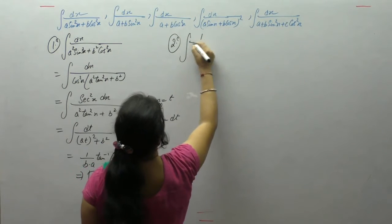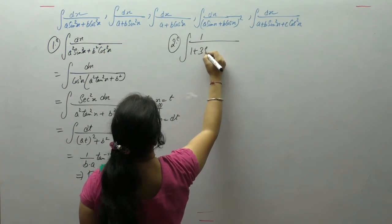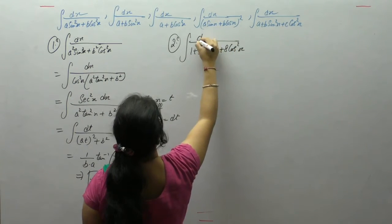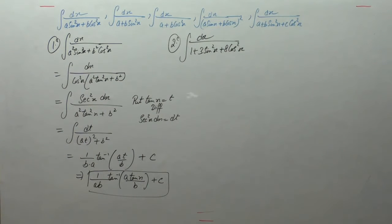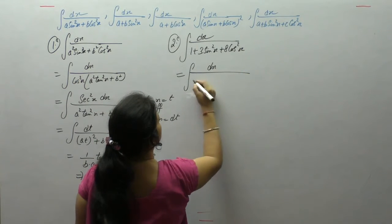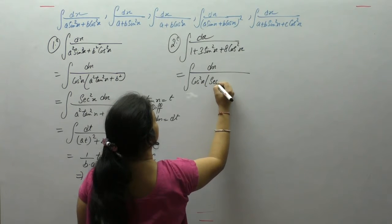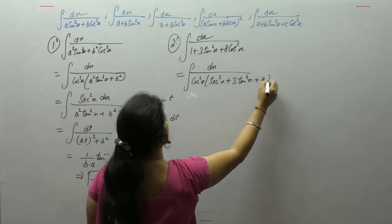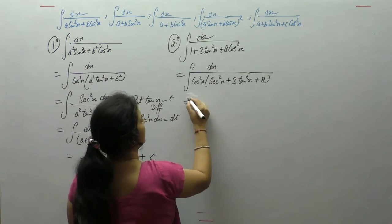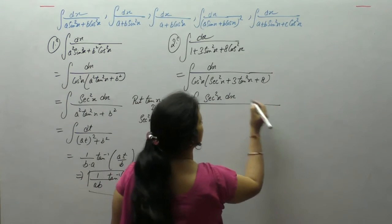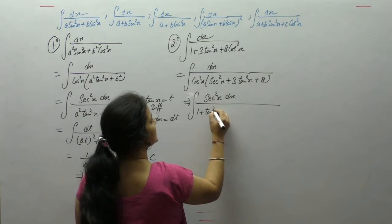Next is the integral of 1 upon 1 plus 3 sin²x plus 8 cos²x dx. Take cos²x common: 1 upon cos is sec, sin upon cos is tan, cos upon cos is 1. Now write 1 upon cos as sec², and in the denominator write sec² as 1 plus tan²x.